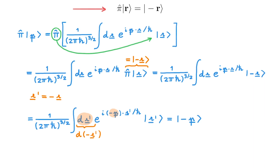What this all means is that the action of the parity operator on a momentum eigenstate gives another momentum eigenstate with an eigenvalue reflected about the origin. This strategy is general: to figure out the action of the parity operator on a general state, we first write out the state in the position basis, and then act with the parity operator on the individual position eigenstates. This example shows that the parity operator acts on both position and momentum eigenstates in the same way — we simply reflect both quantities about the origin.